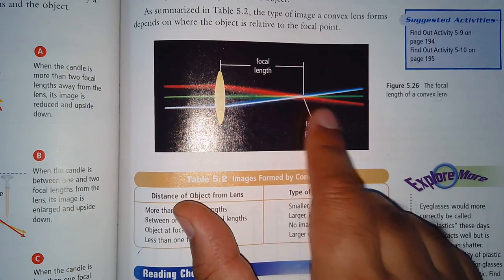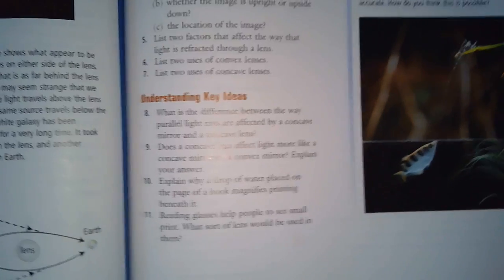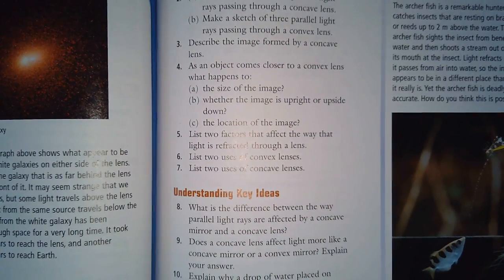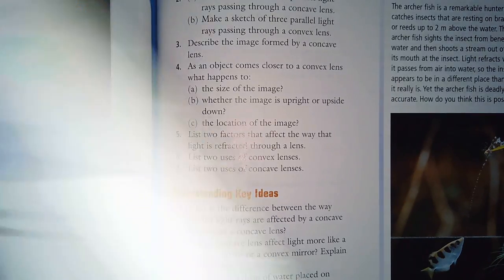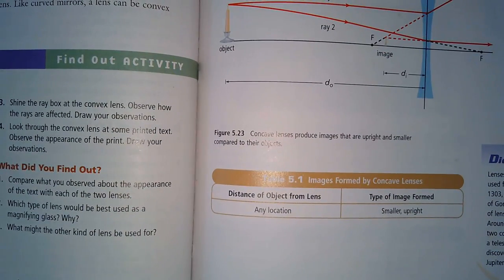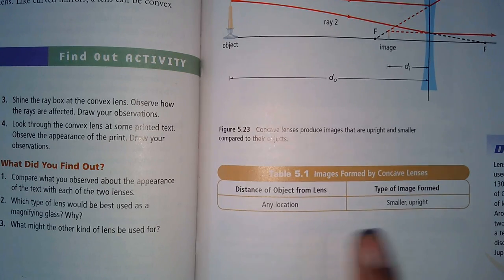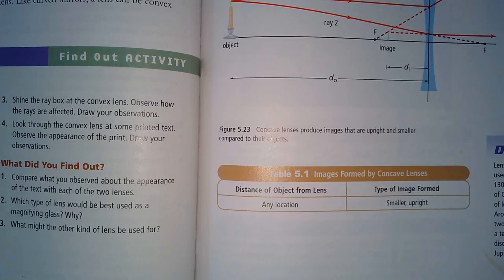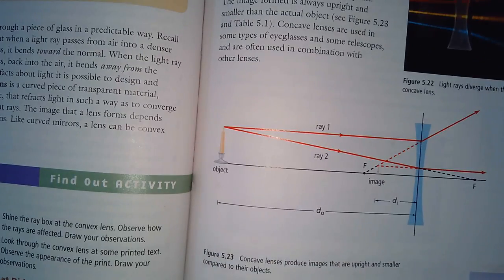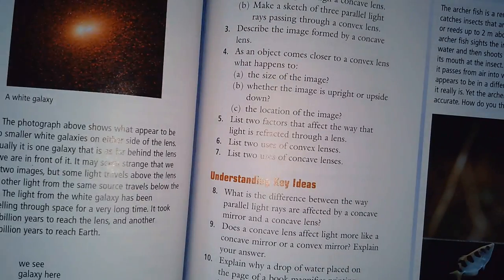And then for the convex lens, what happens is they converge—they meet up at the focal point and then they diverge afterwards. Number three: the image formed by a concave lens. So the concave lens, regardless of where you are at any location, the image formed is always going to be smaller and upright. That means the orientation stays the same.